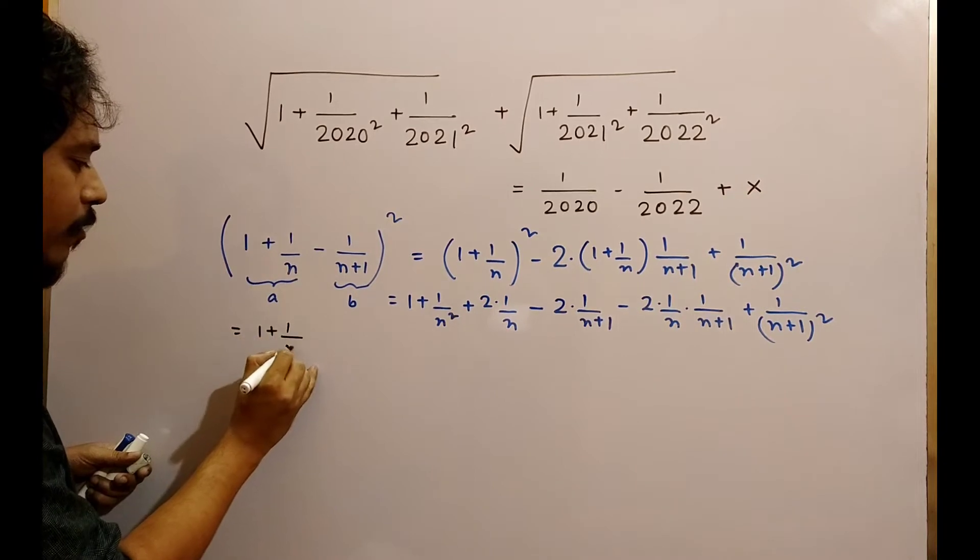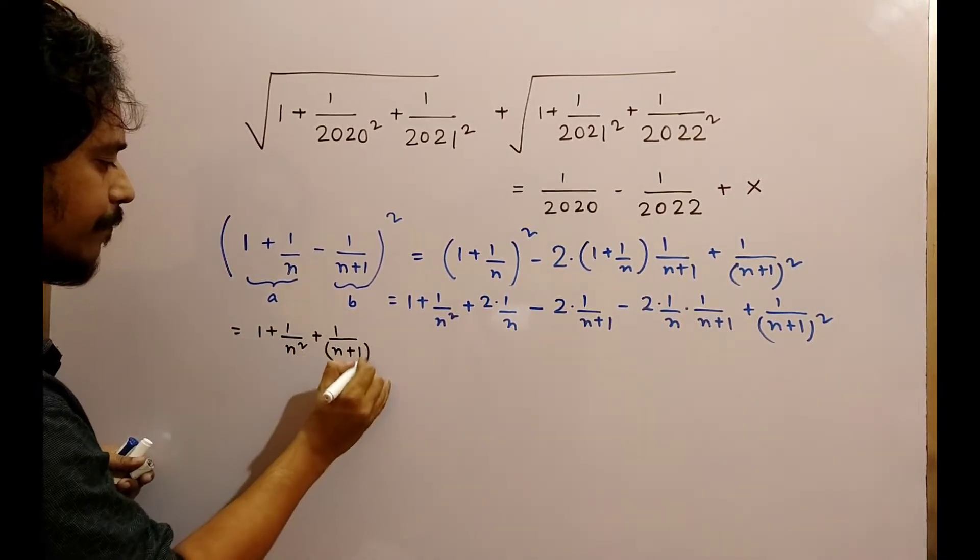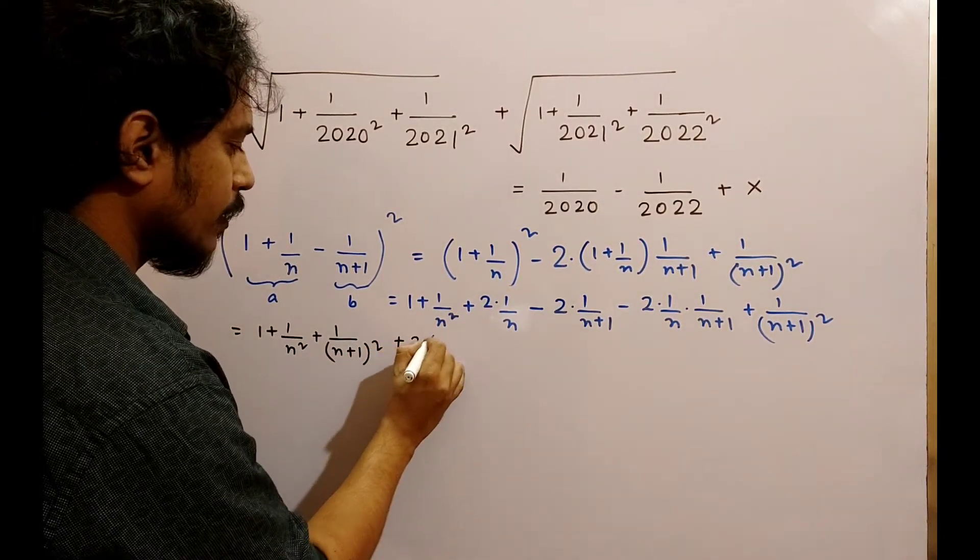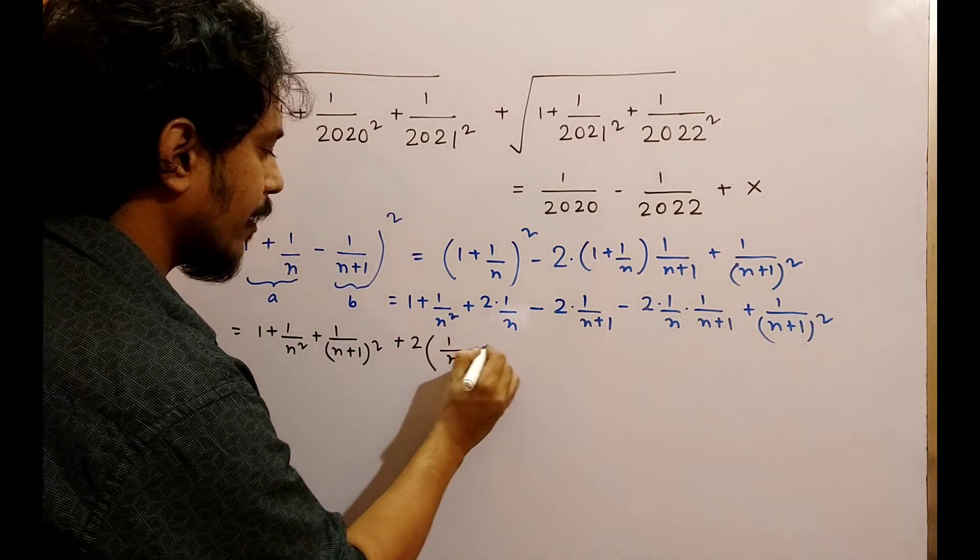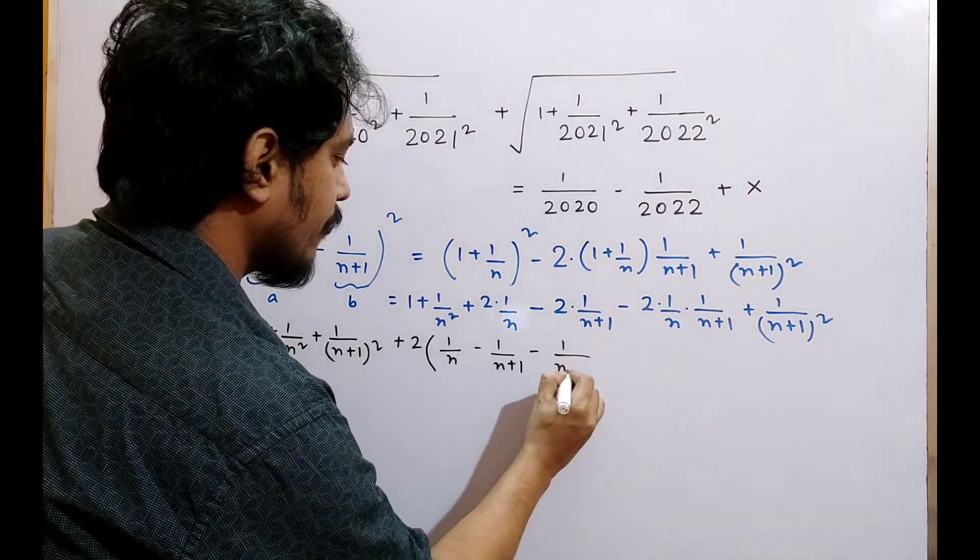1 plus 1 by n square plus 1 by n plus 1 is the whole square. Here is minus 2, plus 2, plus 1. So what do we do? 1 by n minus 1 by n plus 1 minus 1 by n into n plus 1.